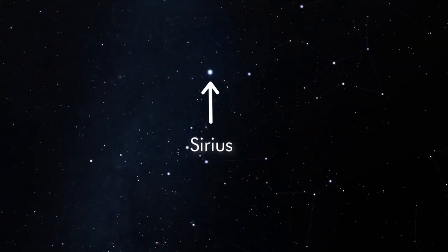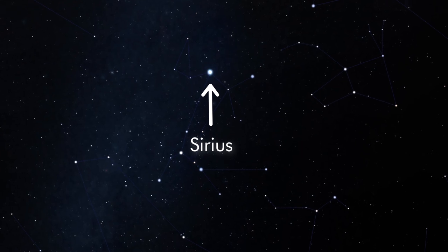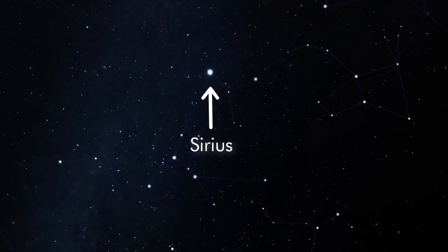In fact, the brightest star in the night sky, Sirius, has a white dwarf companion, which we call Sirius B.